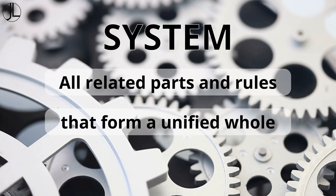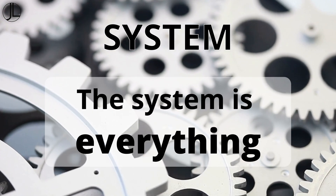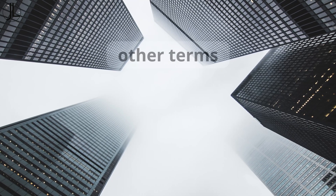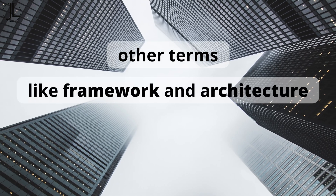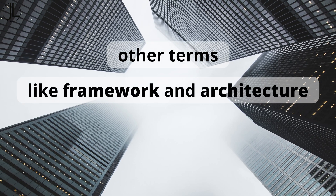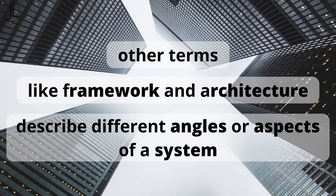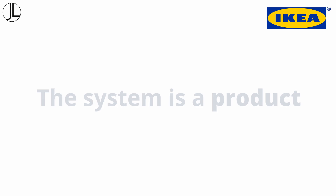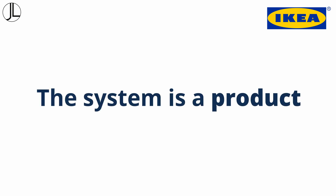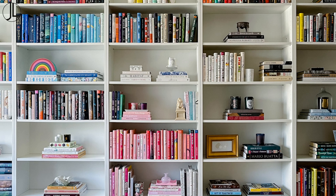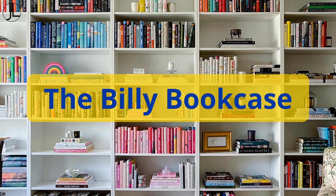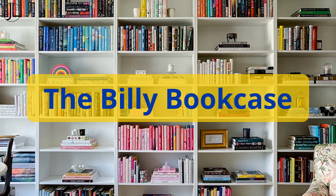Or put in simple terms, the system is everything. All other terms, like framework and architecture, describe different aspects of a system. In our IKEA metaphor, the system will be a product — and in this case, the Billy bookcase, which is an old childhood memory of mine.